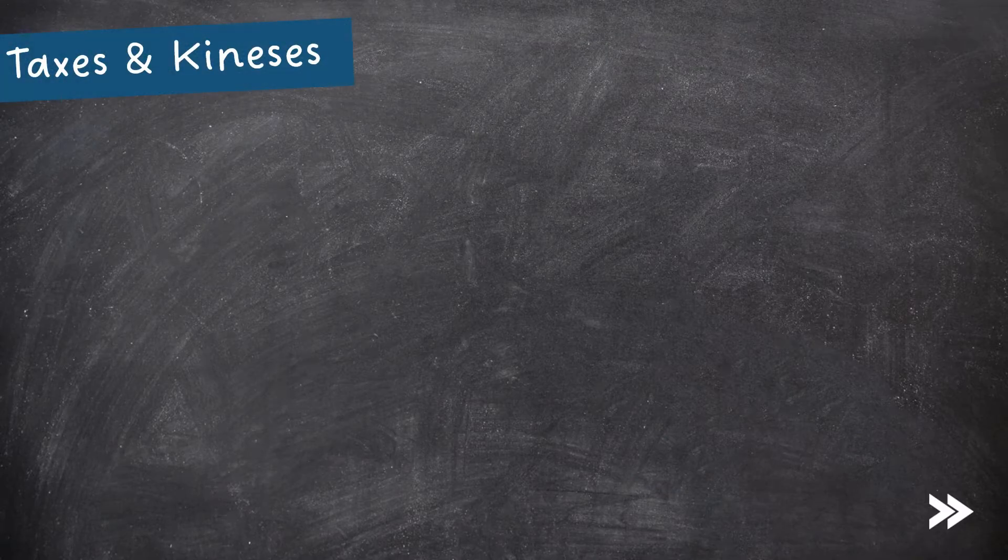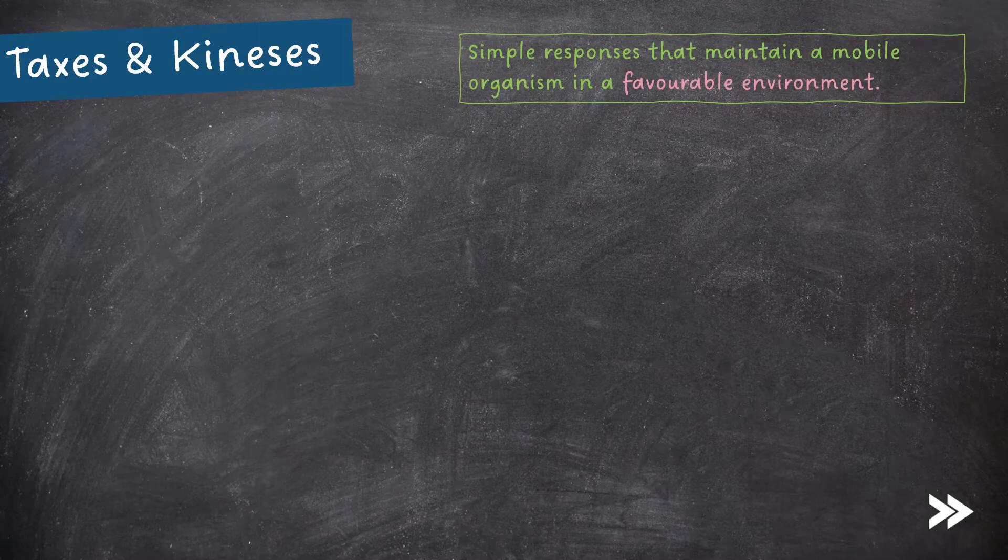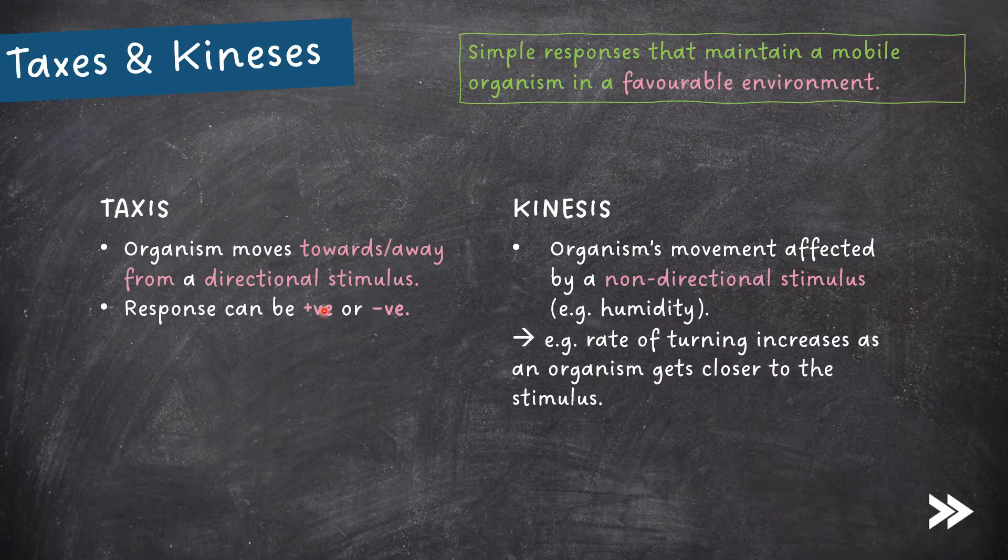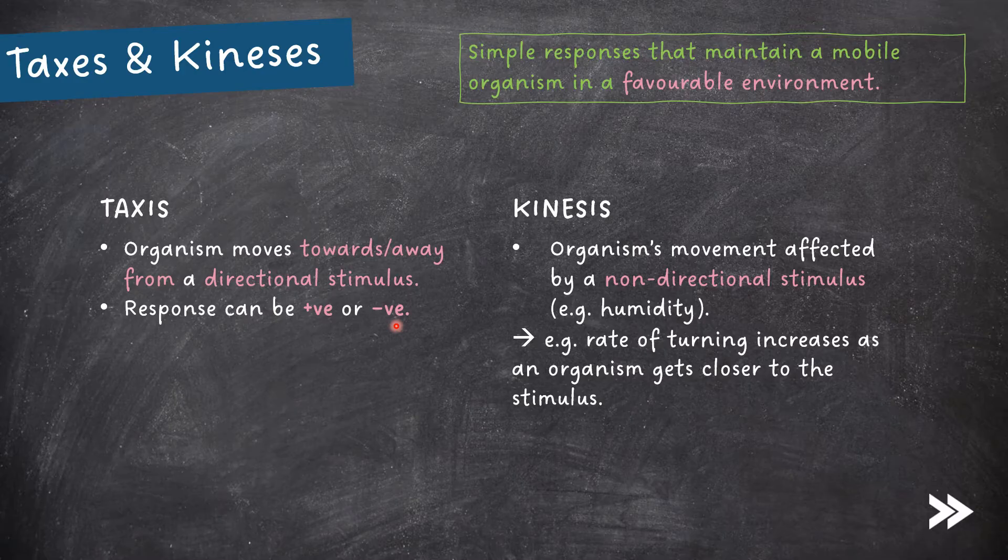Next, we have taxis and kinesis. These are simple responses that maintain a mobile organism in a favourable environment. In a taxis, an organism moves towards or away from a directional stimulus. The response can be positive or negative, i.e. if it is positive, it is towards, and if it is negative, then it is away from the directional stimulus.